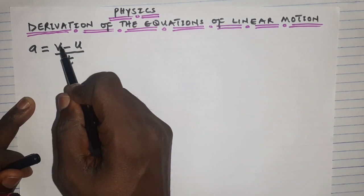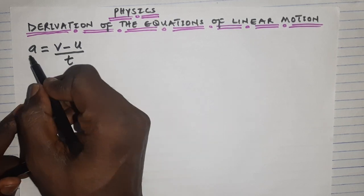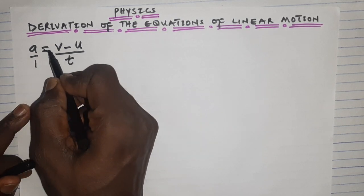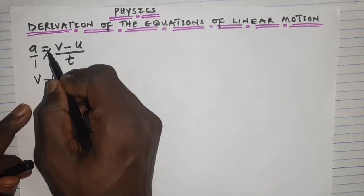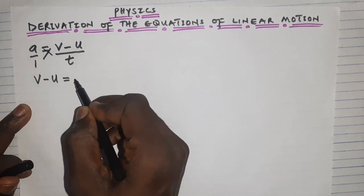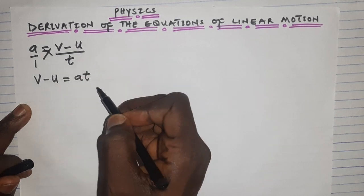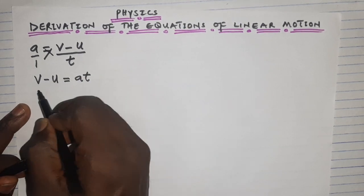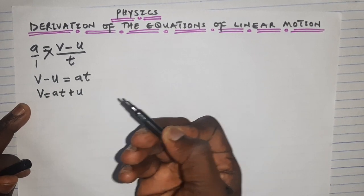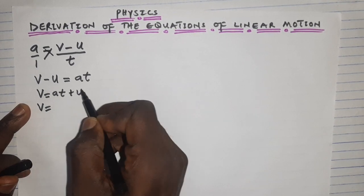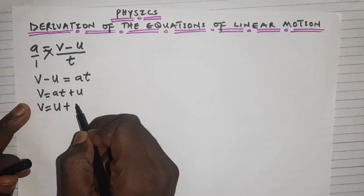We want to make v the subject of the formula. Cross-multiplying: put a over one and cross multiply. v minus u equals at. Then move minus u over to become plus u, giving v = at + u, which we rewrite as v = u + at.